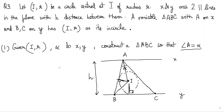So now we have to think about how we will construct it using compass and straight edge. What we know is the AB line is tangent to this circle and AC line is tangent. Let's mark this tangent point as F. In triangle AFI, it is clearly a right angle triangle because this angle is 90 degrees. What we have is IA equals IF divided by sine(alpha/2).